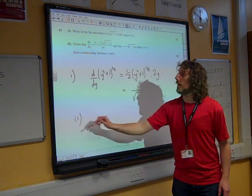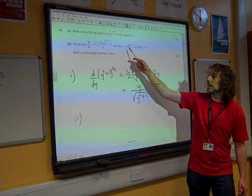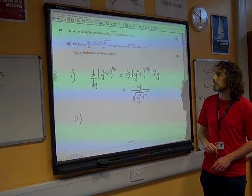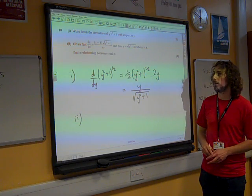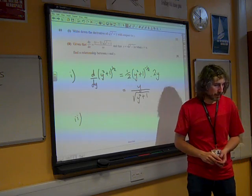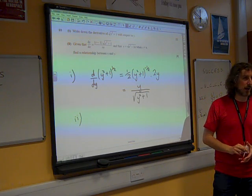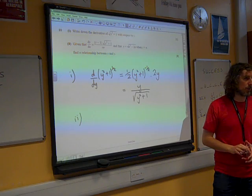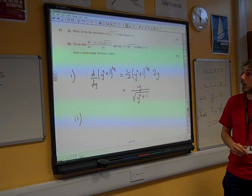So part two said, given that dy by dx is this expression, and that y equals the square root of e squared minus 2e when x is e, find a relationship between x and y. So that means we just need to find an equation linking x and y together. We don't have to find it in the form y equals or x equals, we just want the link between them.